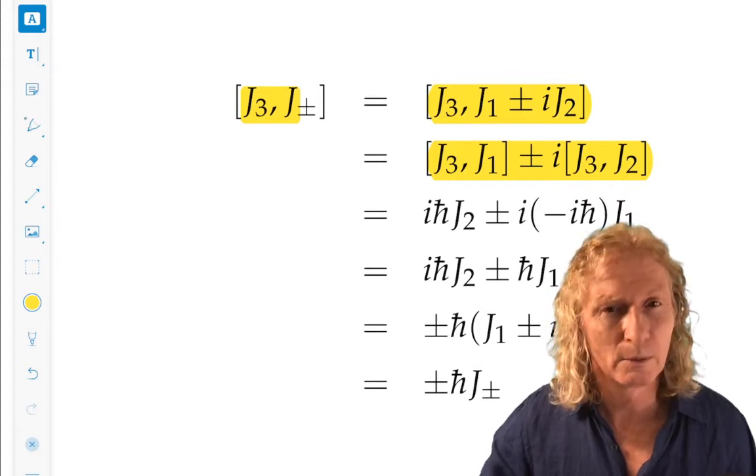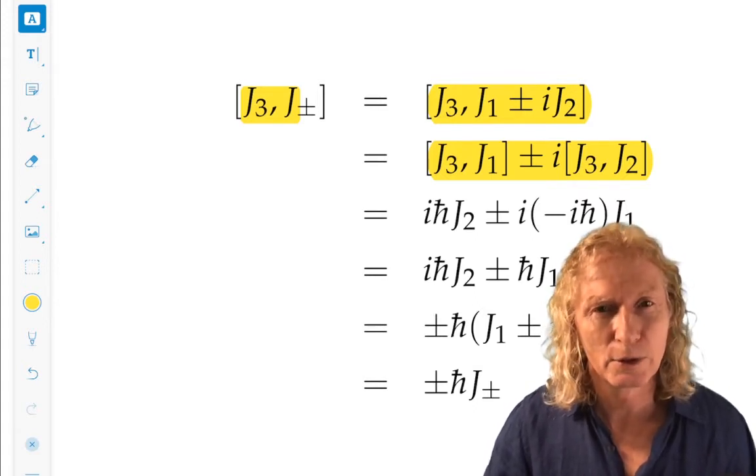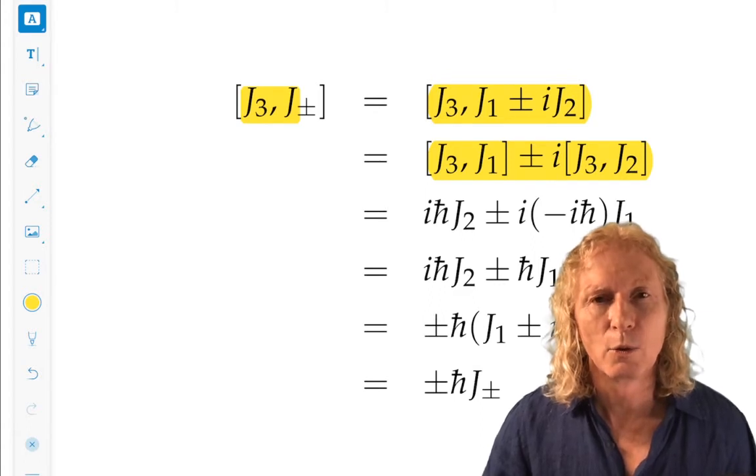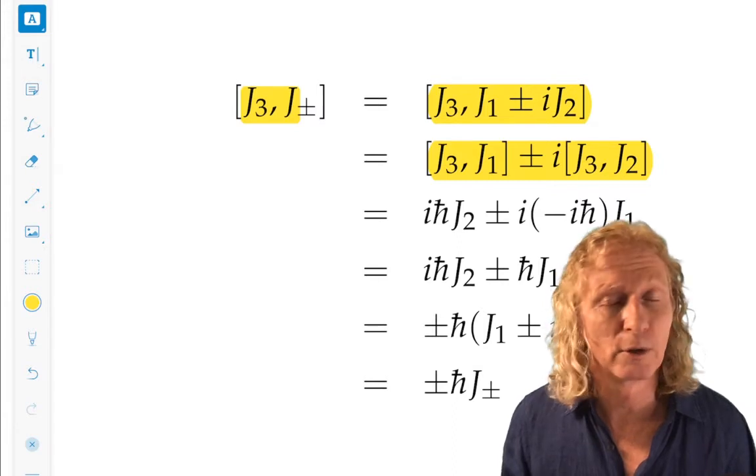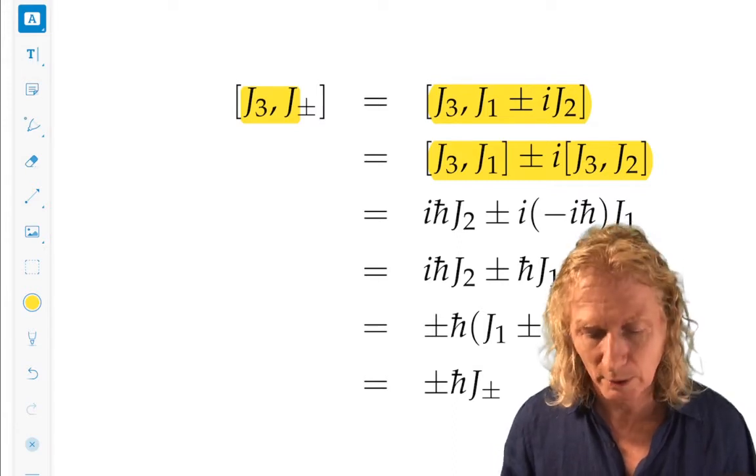We took that as definition for the quantum angular momentum operator. The three Hermitian operators, or self-adjoint operators, satisfy the commutation relation.